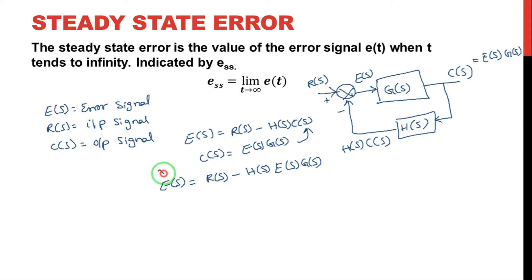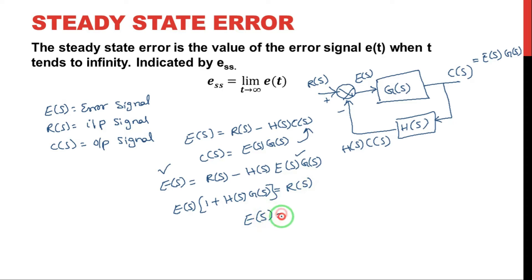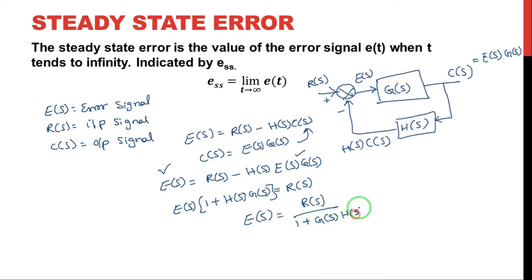Now there is the error signal on the left-hand side and right-hand side. By taking the common term E(s) from left side to the right side: 1 plus H(s) into G(s) is equal to R(s) on the right side. So finally, the error signal E(s) is equal to R(s) divided by 1 plus G(s) into H(s). This is the error signal in the S-domain.